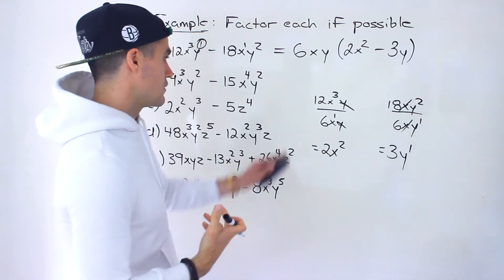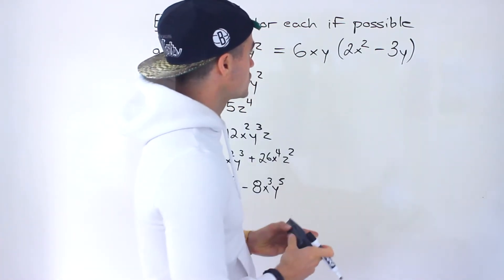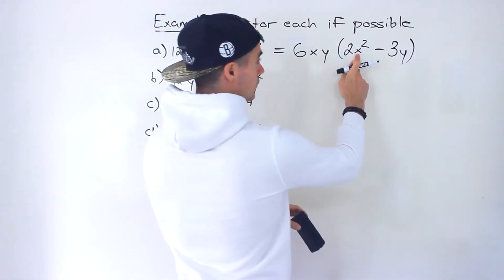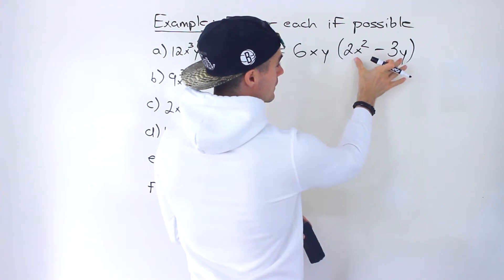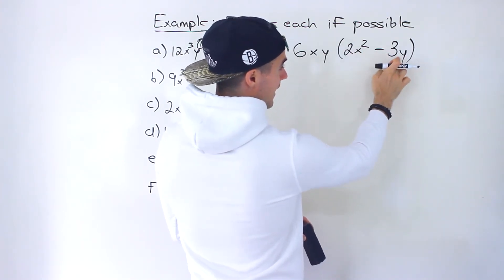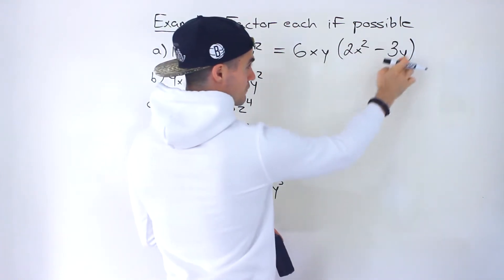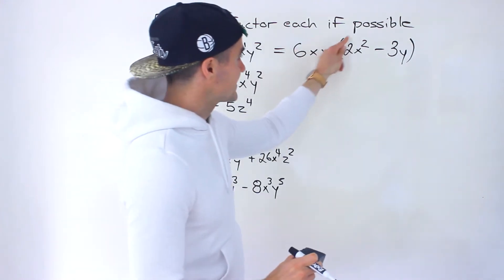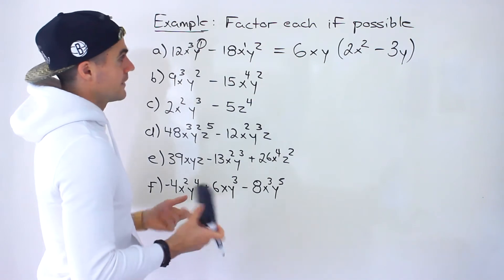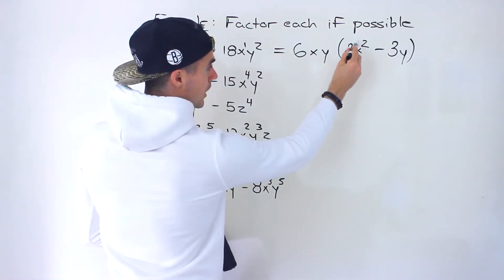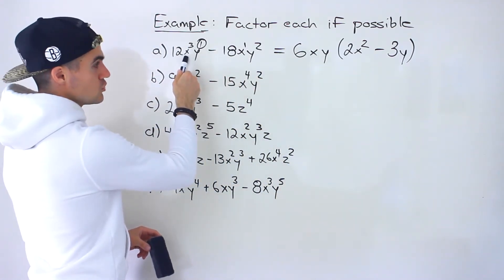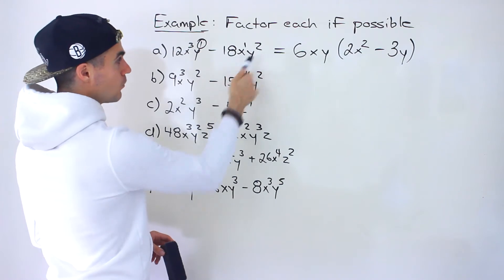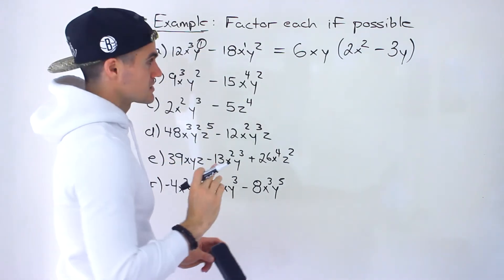That ends up being the final answer: 6xy(2x² − 3y). A couple of checks: can you factor this expression further? 2 and 3 share no common factor. We have an x in one term and a y in the other — no shared variable — so you can't factor further. Another check: expand inside the bracket. 6xy times 2x² gives 12x³y, and 6xy times negative 3y gives negative 18xy squared — matching the original.